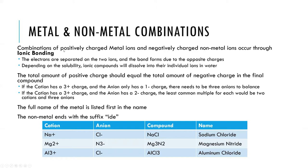When you're naming these compounds — a combination of a metal and a nonmetal — the metal name goes first. So sodium, magnesium, and aluminum are listed first in the name and in the chemical formula. The nonmetal is listed second and has the suffix -ide. So the chlorine atom as an ion would be a chloride ion, and the nitrogen atom as an ion would be the nitride ion.